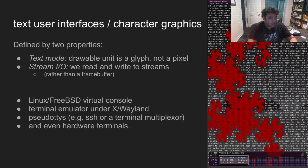Of what do we speak when we say text user interfaces and character graphics? I define them by two properties. One: we're creating a visual rectilinear presentation, but we're drawing with a pre-made set of glyphs — a font — as opposed to pixels. I don't like to say characters because there's not a bijection between drawable glyphs and characters, as we'll see in a minute. Ideally, this is a fixed-width font.